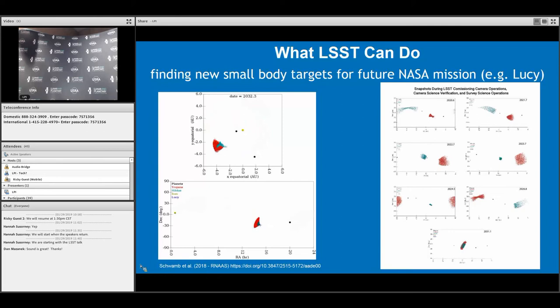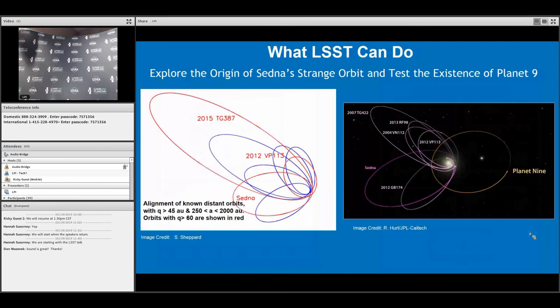This is one way that LSST will help future NASA assets by finding more small bodies for current missions being planned and ones planned in the future.